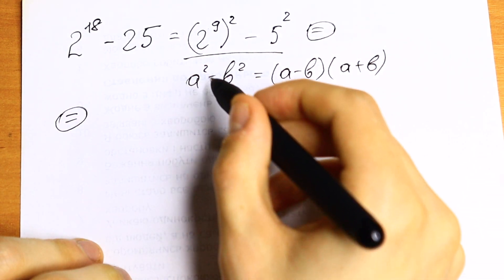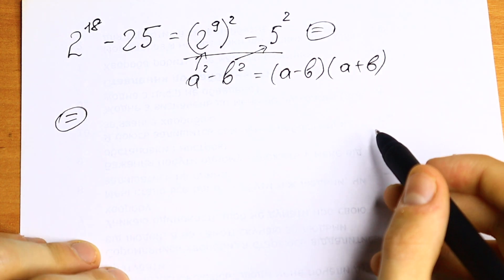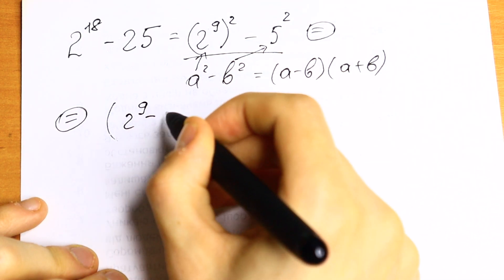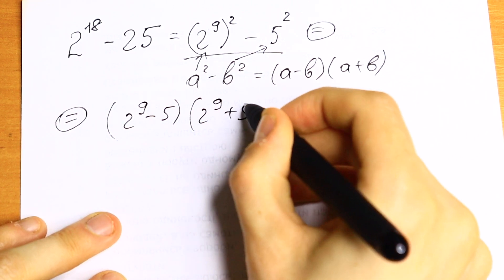What we'll have our a equal to 2 to the 9th power and our b equal to 5. So as a result we'll have a minus b, 2 to the 9th power minus 5, and multiplying by 2 to the 9th power plus 5.